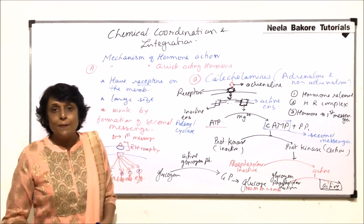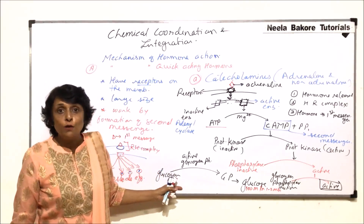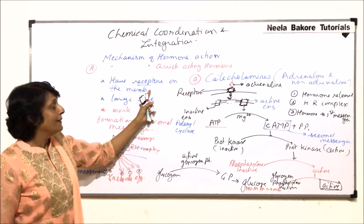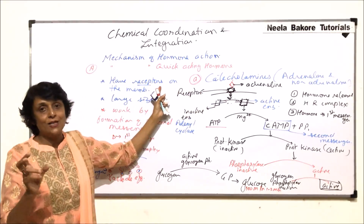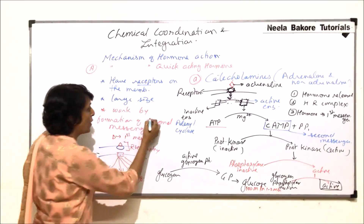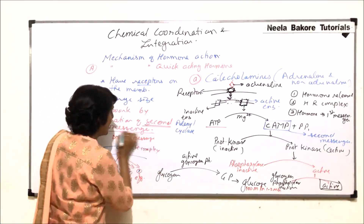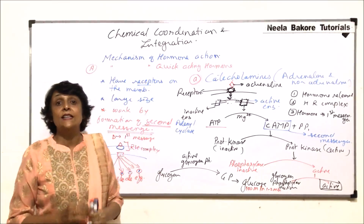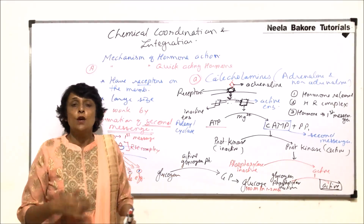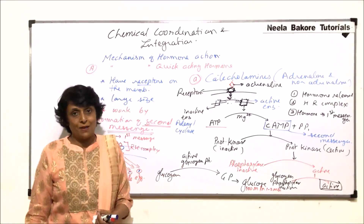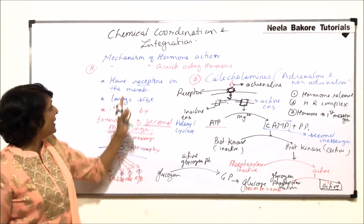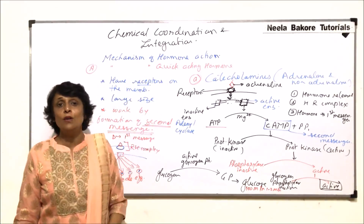This is one example of a quick acting hormone. Their receptors are on the membrane, they are large molecules that cannot cross the plasma membrane, and they work by formation of a second messenger with a cascade effect. At every step, multiple molecules help bring about the next step reaction. The next example we would be discussing is insulin, which is again in the quick acting hormone category.